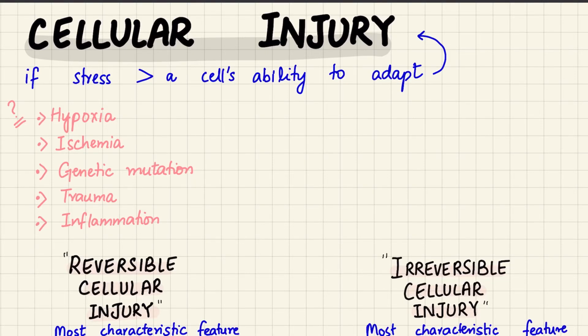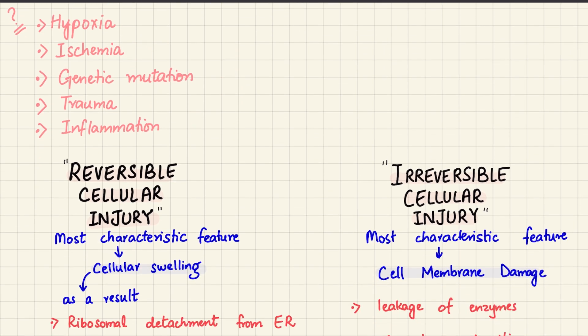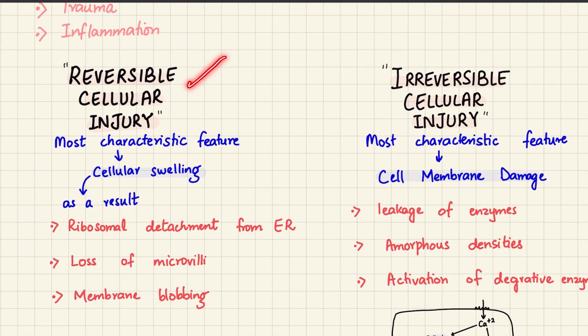Let's look at cellular injury. When the stress on a cell becomes too much for it to handle, it leads to cellular injury. This can happen for a variety of different reasons such as hypoxia, ischemia, genetic mutation, trauma, or inflammation. Cellular injury can either be reversible or irreversible depending on how severe the stress is and how long it lasts.